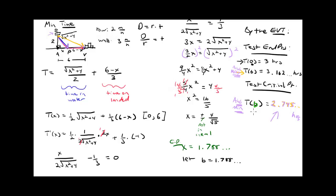The x-value b represents where to land, and T(b) represents the total minimum time. So we've successfully minimized the time for rowing and walking to the village — the answer is approximately 2.745 hours.